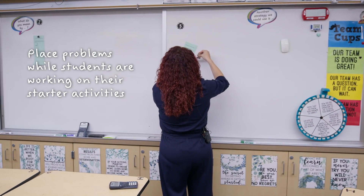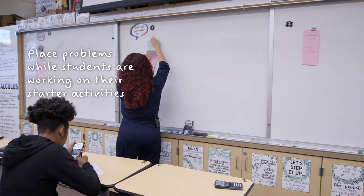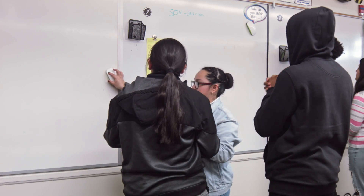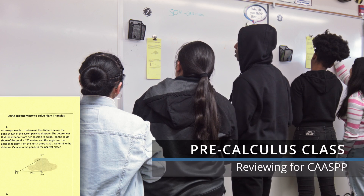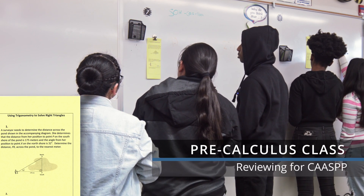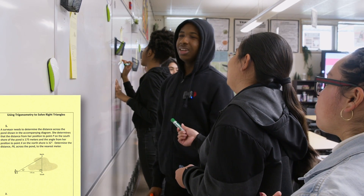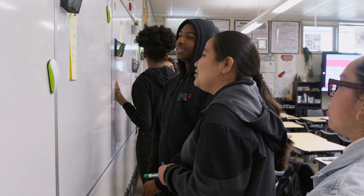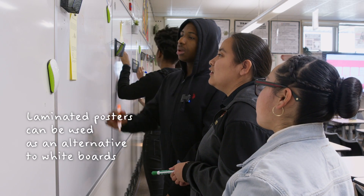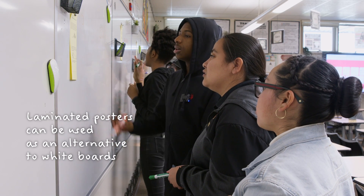The problems are already on the board so that when students go up, they're ready to work and start talking and solving. The problem is to determine the distance across the pond shown in the diagram. She determines that the distance from position A to position P on the south shore of the pond is 175 meters. We do have to solve it — determine the distance between P and X.